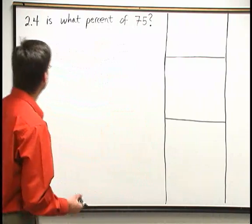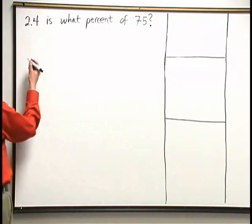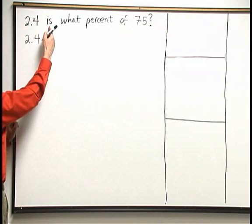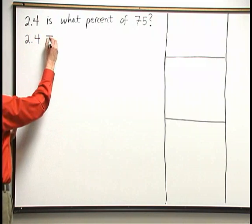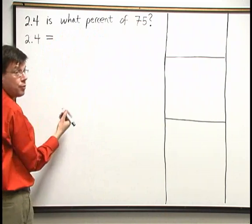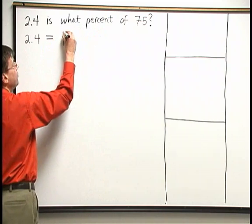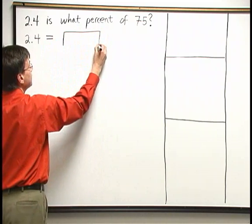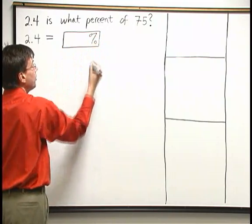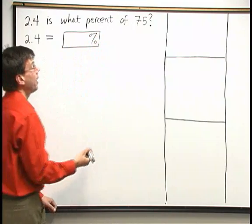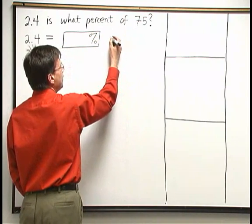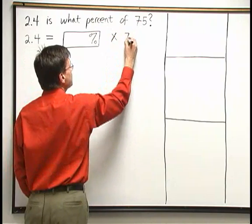Let's go ahead and translate now. 2.4, I'm just going to recopy. Is translates here as equals. What percent? Those words represent the number we're trying to find. I'll write a box. And because we want a percent answer, I'll put a percent sign inside the box. Percent of 75 translates as percent times 75.